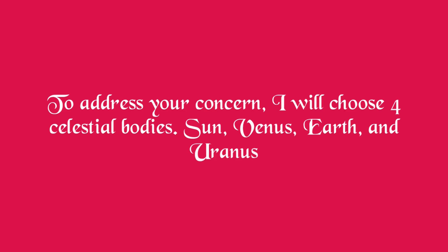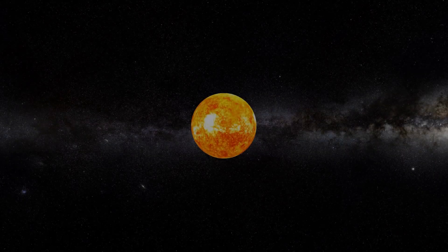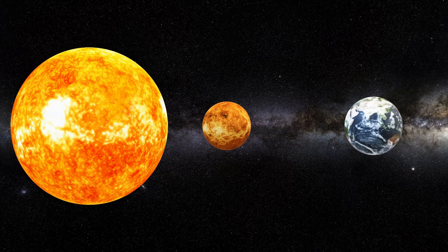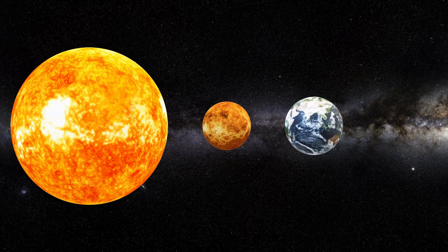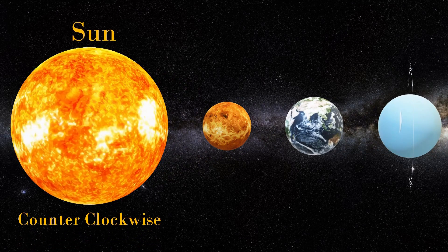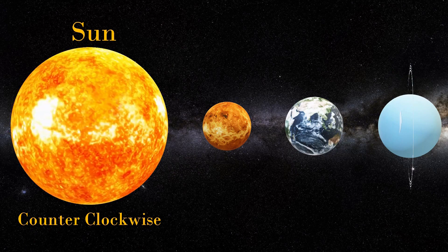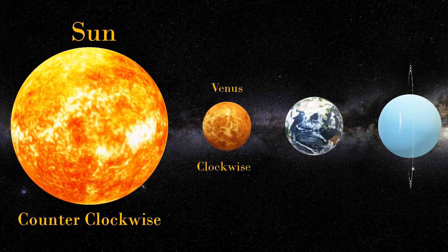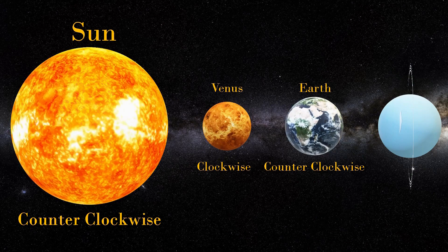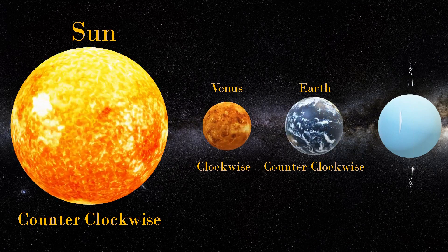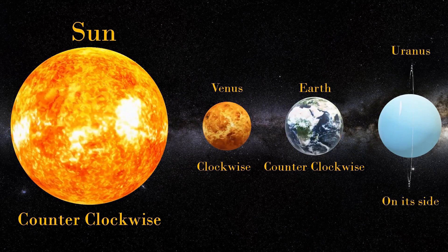To address your concern, I will choose four celestial bodies: Sun, Venus, Earth, and Uranus. The Sun rotates on its axis counterclockwise. Venus rotates clockwise. Earth follows the Sun in its rotation and rotates counterclockwise. Uranus spins on its side.